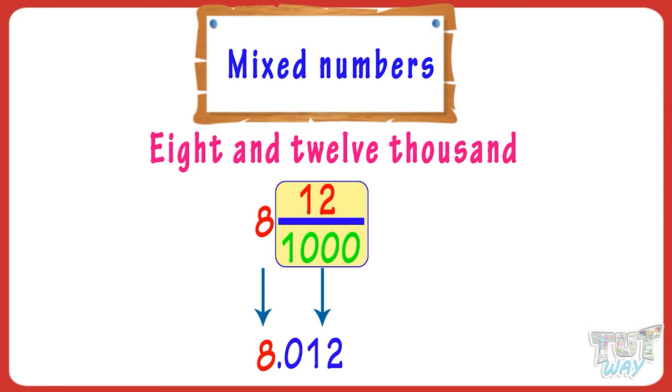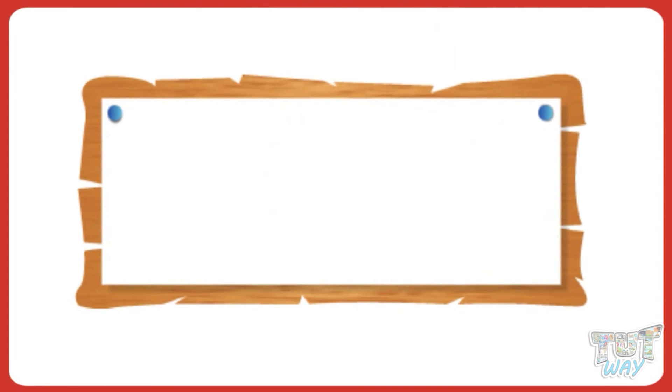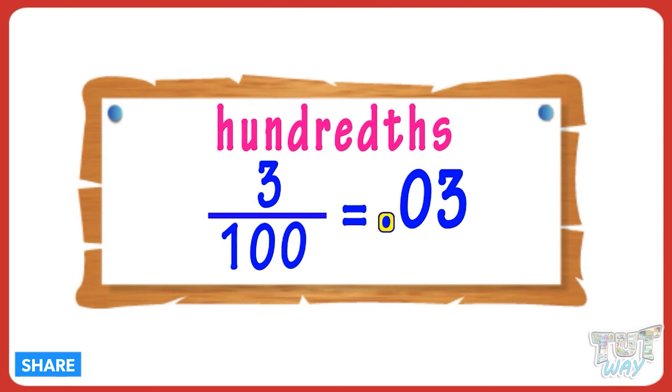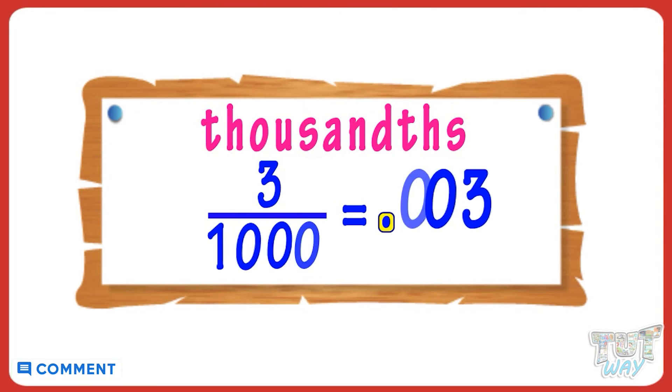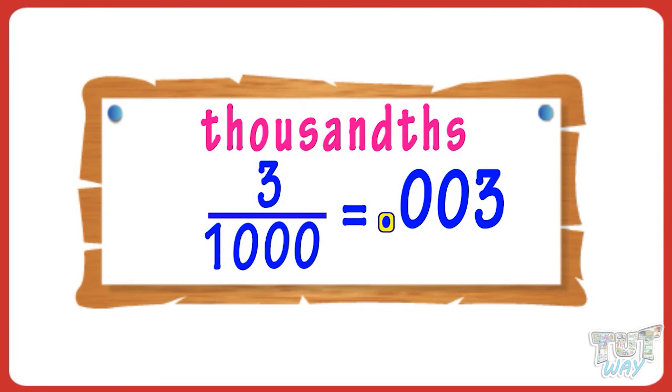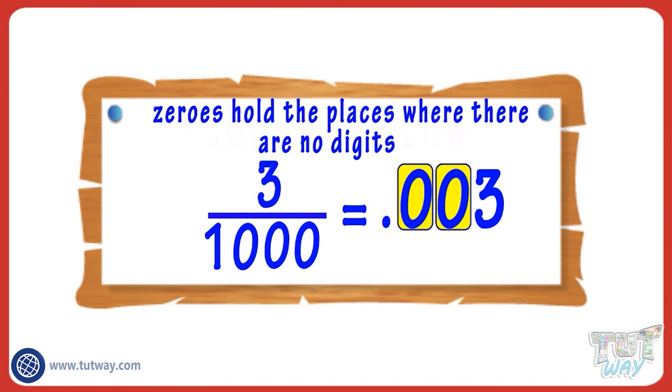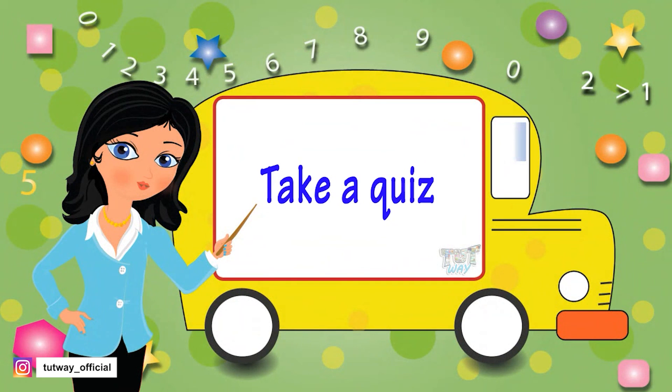So kids, today we learned how we can convert fractions to decimals. If it's tenths, we place the decimal after 1 digit from the left. If it's hundredths, we place the decimal after 2 digits from the left. If it's thousandths, we place the decimal after 3 digits from the left. Zeros hold the places where there are no digits. Now go ahead and take a quiz to learn more.